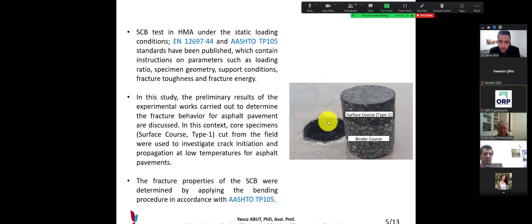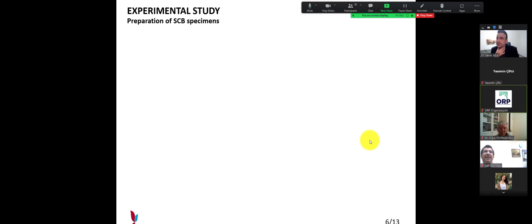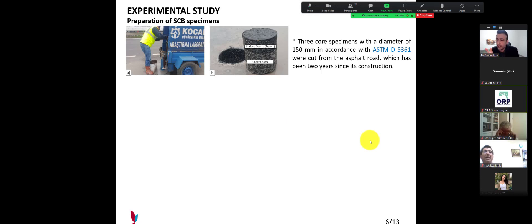In this context, core specimens, surface cores type one, you can see the core, and the bottom is the binder cores, cut from the field were used to investigate crack initiation and propagation at low temperatures. The fracture properties of the SCB were determined by applying the bending procedure in accordance with H2TP-105. The experimental study has four parts: preparation of SCB specimens. The first part is about the core sample taken from the pavement. Three core specimens with a diameter of 150 mm in accordance with ASTM D5361 were cut from the asphalt road, which has been two years since its construction.